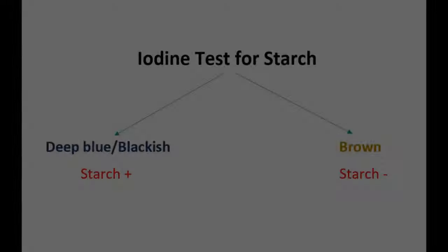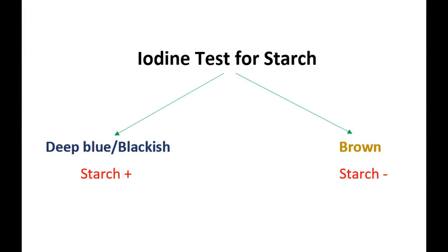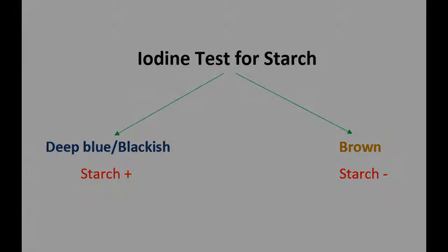The absence or presence of starch, and thereby photosynthesis, is determined using iodine solution, which turns blue-black in color in the presence of starch but retains its original brown color in the absence of starch.